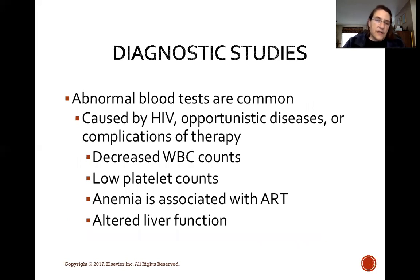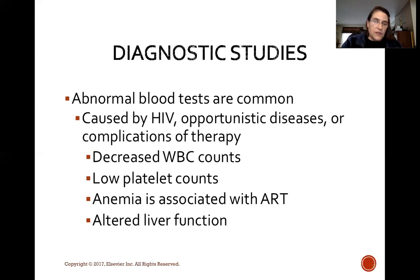Abnormal blood tests are common with HIV. We'll see decreased WBC counts, low platelet counts, anemia associated with antiretroviral therapies, and altered liver function. These are caused by HIV itself, the opportunistic diseases that come along with it, and the complications of therapy.